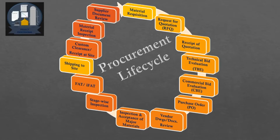During commercial bid evaluation, the primary consideration is cost, and in most cases the selected supplier is the one that provides technically suitable material, components, or equipment at the lowest cost. Once commercial bid evaluation is completed, a purchase order is placed with the manufacturer or supplier. Upon issuance of the purchase order, the manufacturer or supplier provides vendor drawings and documents, which are reviewed by the originator and once approved, the process of acceptance of raw materials for manufacturing begins.